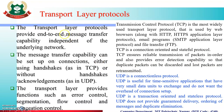Transport Layer protocols are used for end-to-end message transfer. Message transfer can be set up with a connection handshake — using TCP (Transmission Control Protocol) — or without a handshake, using UDP (User Datagram Protocol). Transport layer provides functions such as error control, segmentation, flow control, and congestion control.